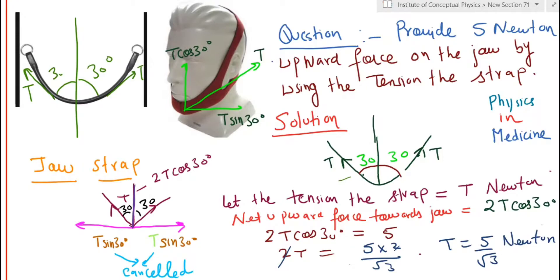The angle on either side with respect to vertical line is 30 degrees. Now what is our goal? Our goal is to provide a five Newton force in the upward direction. Now, if you try and do components of this tension, you will find that the strap has two forces which are upwards. The components are T cos 30 respectively.